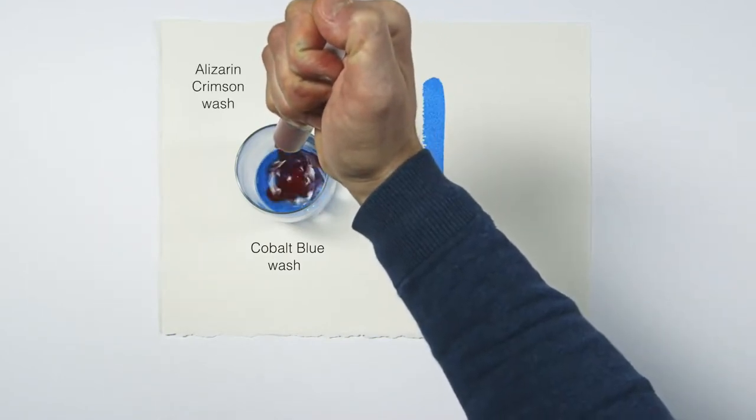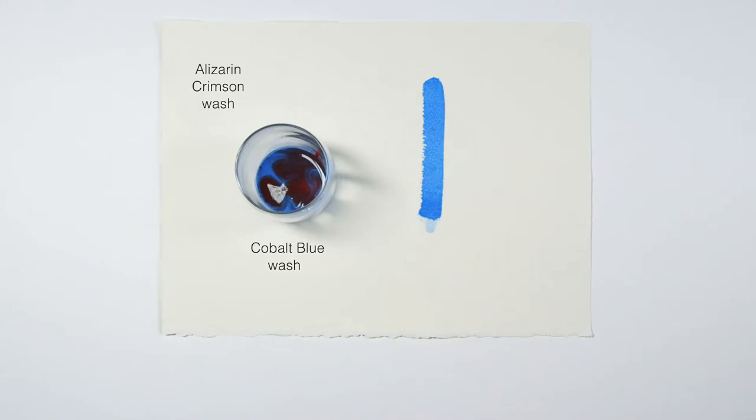I'm blending a purple from cobalt blue and alizarin crimson in a clear glass so I can see the opacity of the paint as well as making sure it's evenly dispersed.